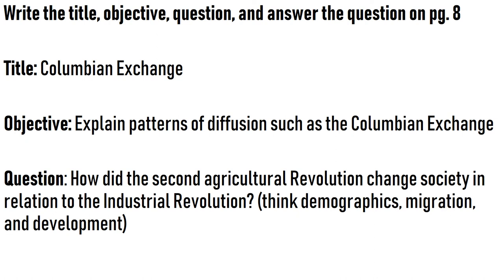Welcome back. This is the second lesson in the Agriculture Unit 5 in AP Human Geography, and today we're going to focus on the Columbian Exchange, still focusing on more historical agriculture stuff. The objective is to explain the patterns of diffusion, such as the Columbian Exchange. You've probably talked about it in the past, but we're going to focus more on how it affects the world from the view of AP Human Geography.